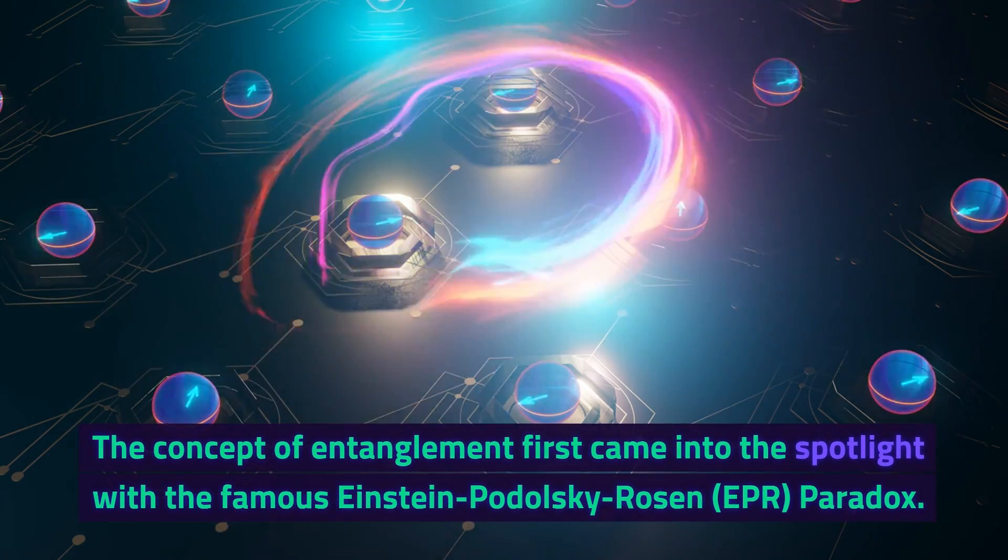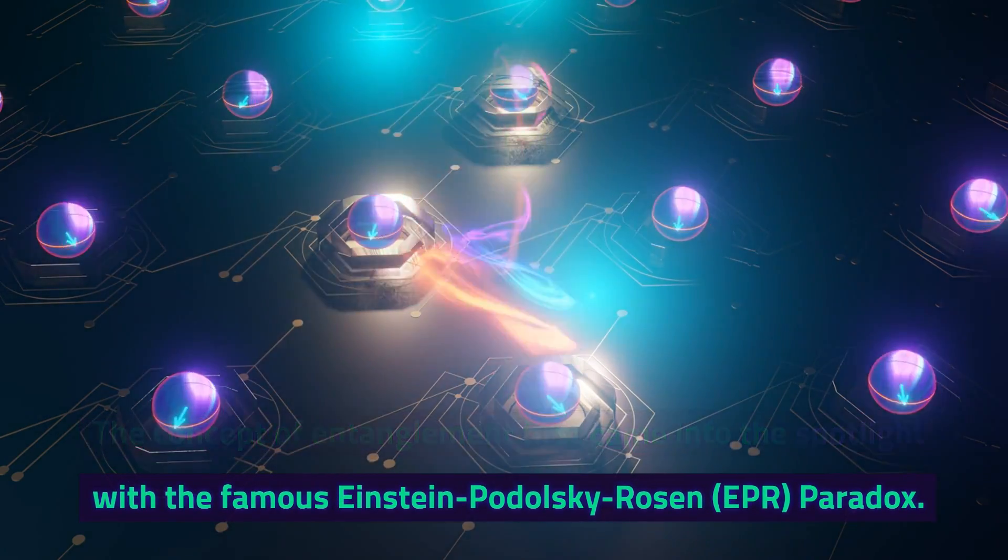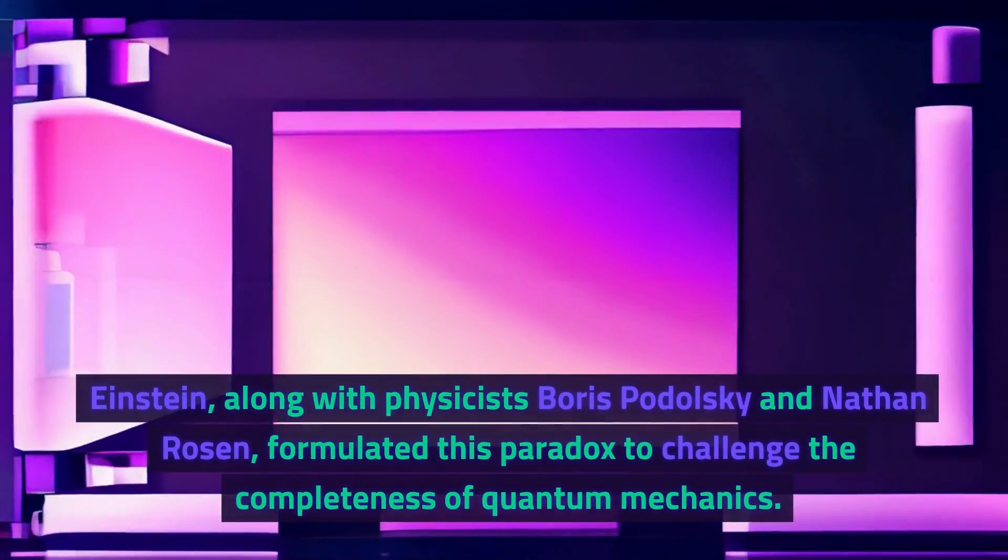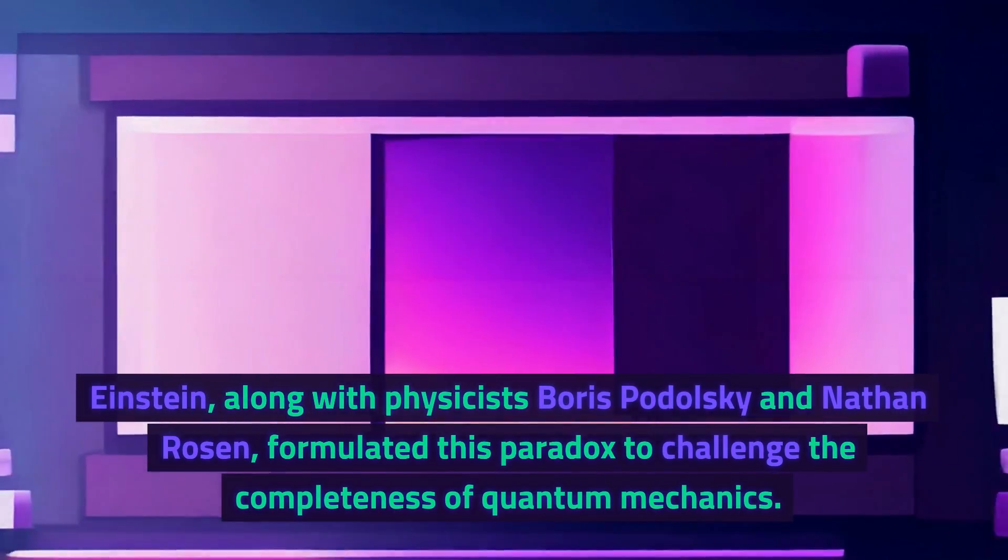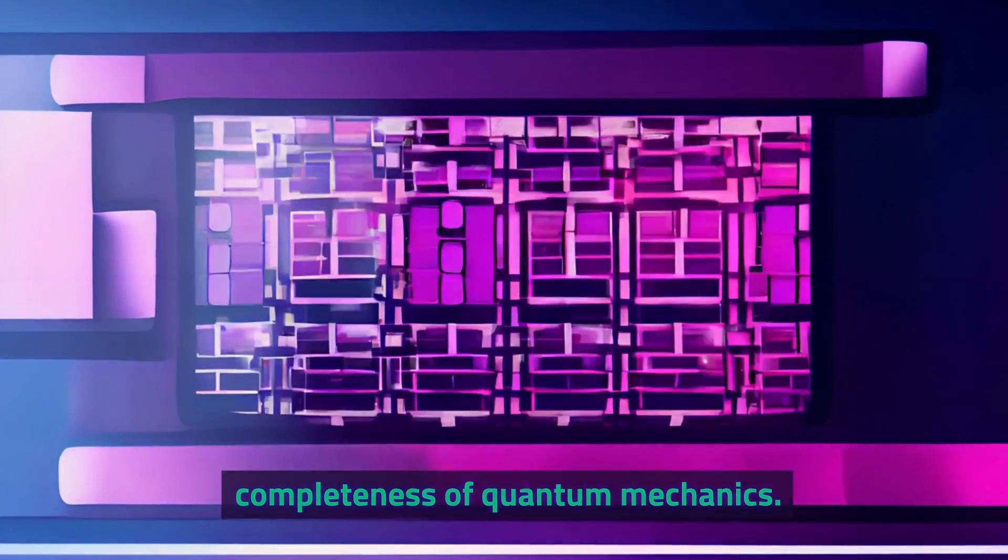The concept of entanglement first came into the spotlight with the famous Einstein-Podolsky-Rosen EPR paradox. Einstein, along with physicists Boris Podolsky and Nathan Rosen, formulated this paradox to challenge the completeness of quantum mechanics.